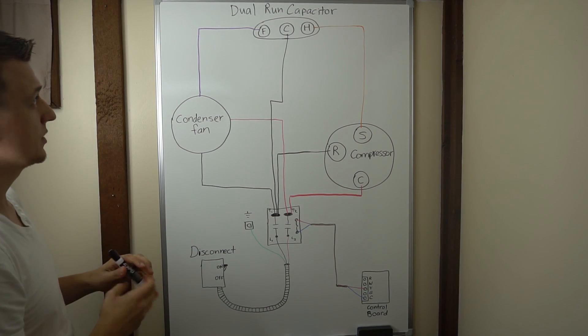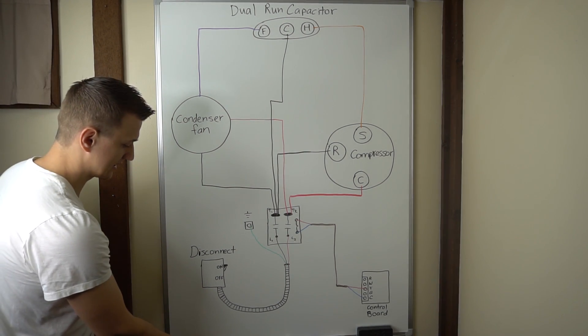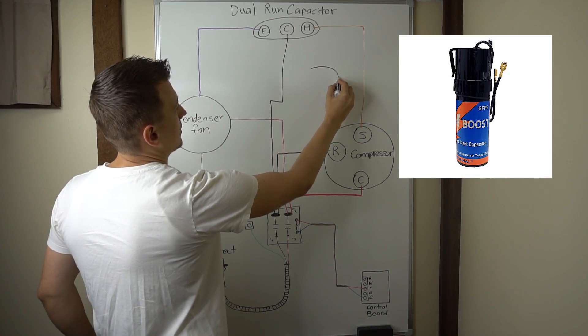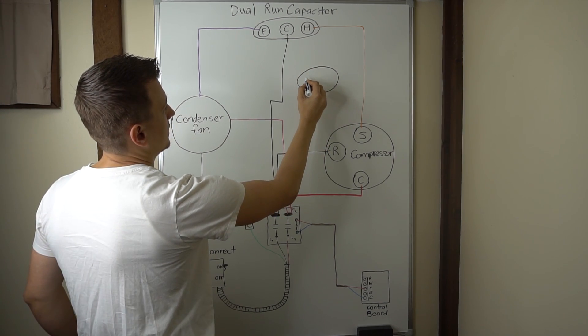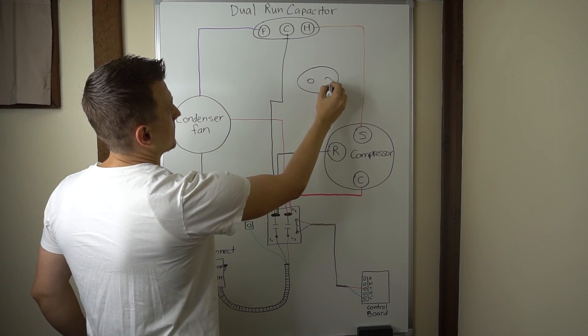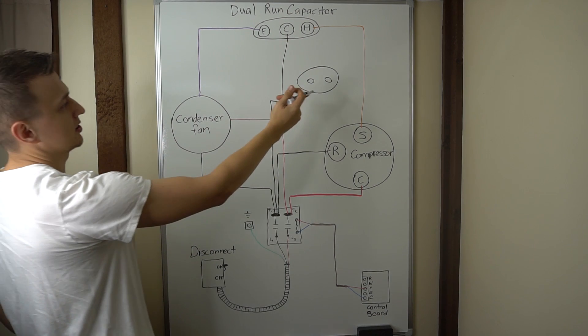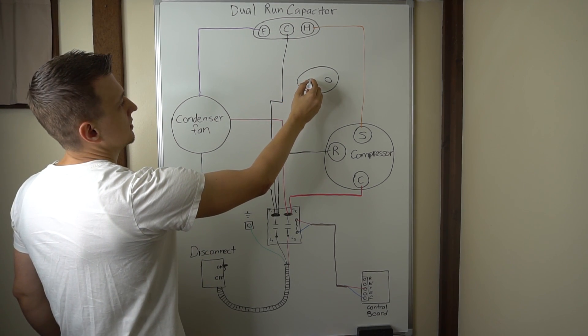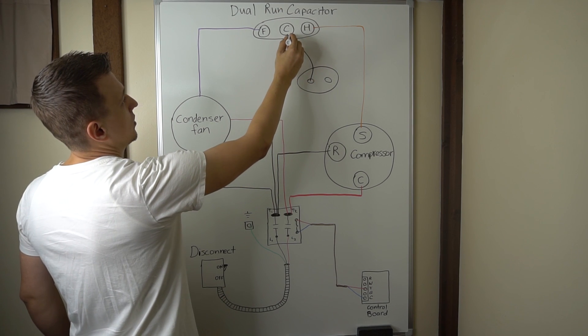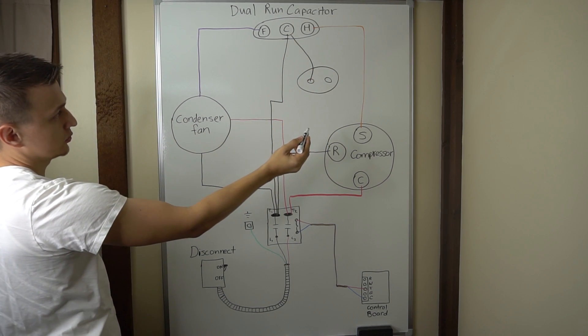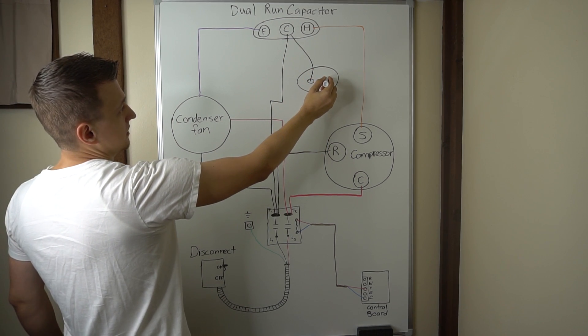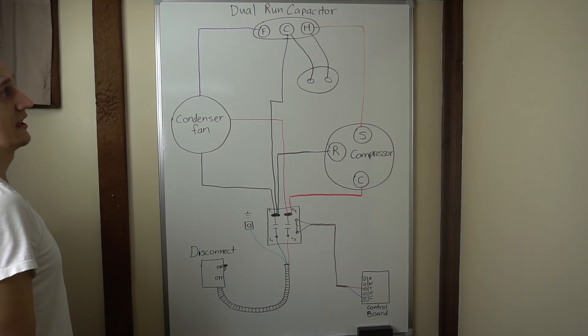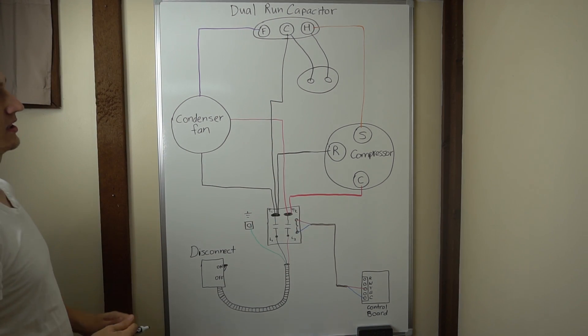But let's say that we want to add a hard start kit to the unit. So let's say this is a hard start kit. It has two wires coming from it. Hard start kits will only have two wires. And these wires will simply go one to common on the dual run capacitor. And the other one to Herm on the capacitor. And that's it for a hard start kit.